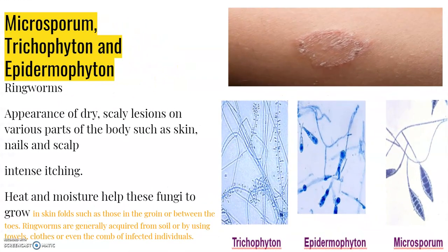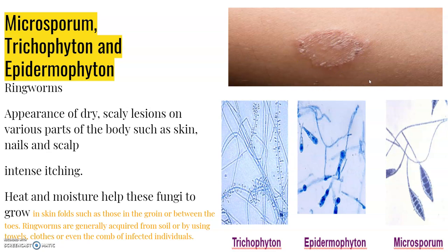Many fungi belonging to the genera Microsporum, Trichophyton, and Epidermophyton are responsible for ringworms, one of the most common diseases in humans. Appearance of dry, scaly lesions on various parts of the body such as skin, nails, and scalp are the main symptoms, accompanied by intense itching. Heat and moisture help the fungi grow and multiply in skin folds such as the groin or between the toes. Ringworms are acquired from soil or by using towels, clothes, or combs of infected individuals.